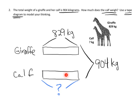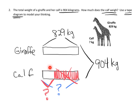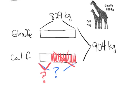Some students will notice that because 829 is really close to 904, the calf's bar should be very short — that's great number sense! The bars don't have to be perfectly proportional; we'll still get the right answer. Since the total is 904 and the giraffe is 829, we use subtraction to find the calf's weight: 904 minus 829.